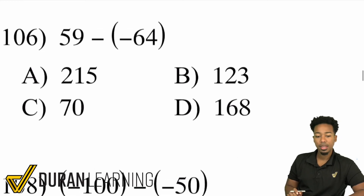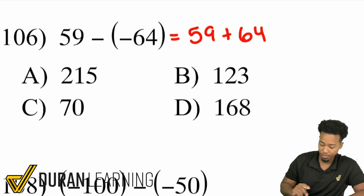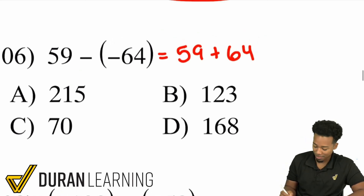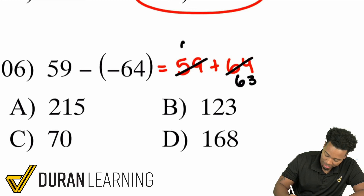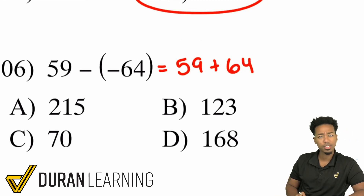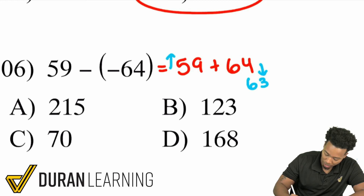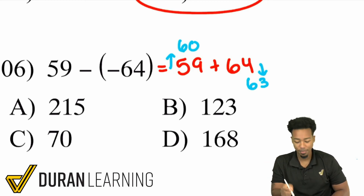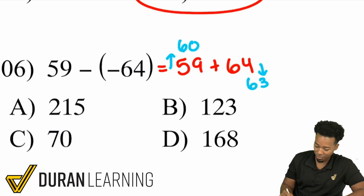Problem 106: 59 minus negative 64. When you're subtracting a negative, that's the same thing as adding. So this becomes 59 plus 64. With mental math, take 1 from 64 to make it 63, and add 1 to 59 to make it 60. Now 60 plus 63 is 123. That makes mental math much easier — you don't have to write anything down.